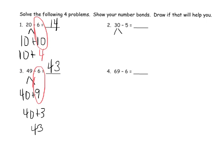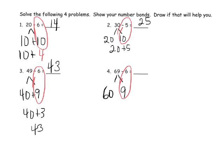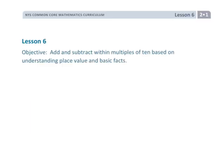Continuing the theme, let's subtract 30 minus 5. I'm going to break this apart to be 20 and 10, and now we do 10 minus 5 is 5, so we end up with 20 plus 5 which equals 25. And lastly 69 minus 6, let's break that up to be 60 plus 9, so 9 minus 6 is 3, so now we have 60 plus 3 is 63. And that is lesson 6.